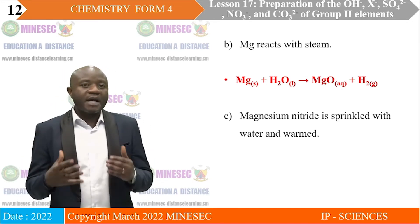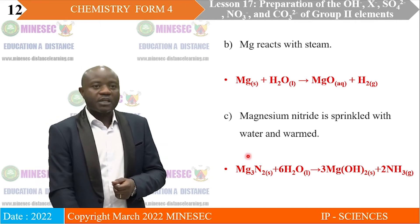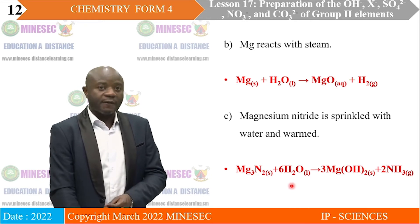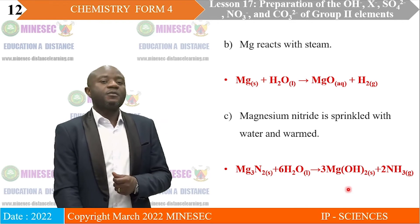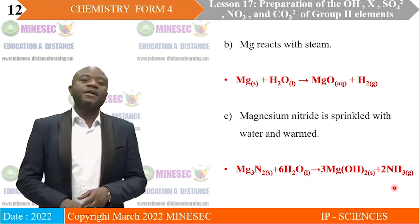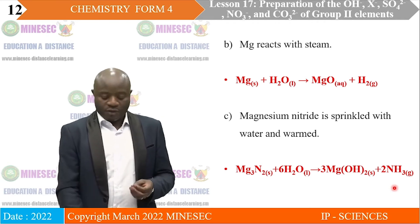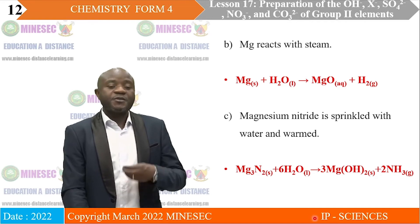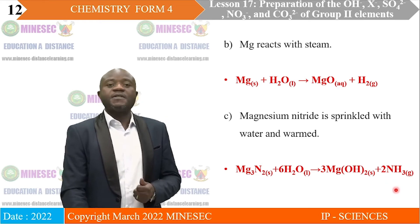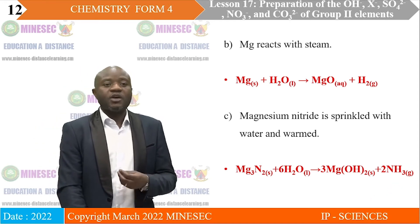C. When magnesium is heated in air, it forms magnesium nitride. When magnesium nitride is sprinkled with water and warmed, the result is the formation of magnesium hydroxide and ammonia, a gas with a pungent choking smell, which is given off. One of the ways you can confirm that Group 2 elements react with nitrogen in air is by sprinkling the products formed when heated in air with water and warming — if a gas with a pungent choking smell that turns red litmus paper blue is produced, it means a nitride was actually formed.